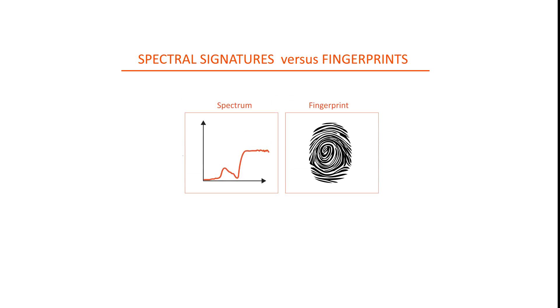Spectral signatures can be compared to fingerprints. Just like fingerprints can be used to identify a person, spectral signatures can be used to identify material.